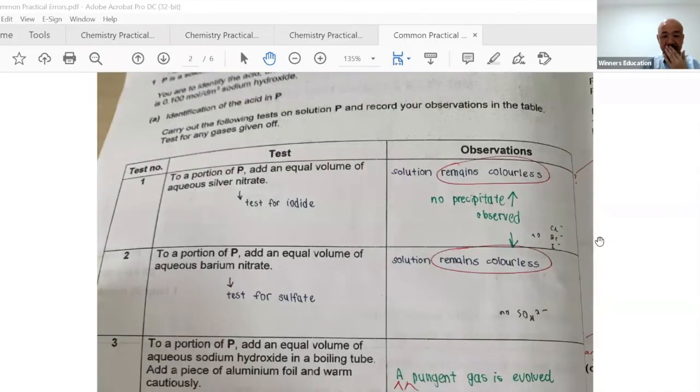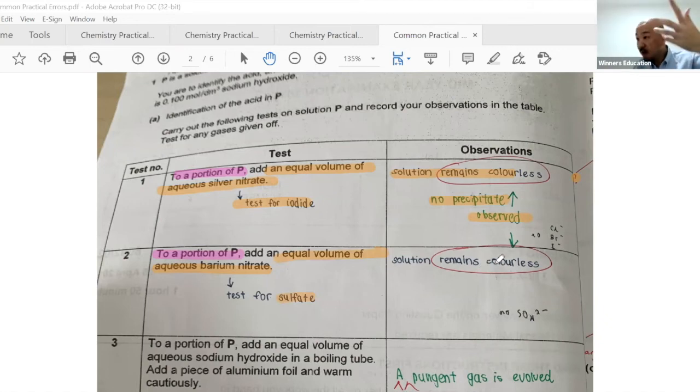Next example - testing with aqueous silver nitrate for halide ions, or barium nitrate for sulfate ions. The student saw nothing and wrote 'solution remains colorless' - minus one mark. You cannot write 'no visible observation.' The answer must be 'no precipitate observed.' This is what you're testing for.